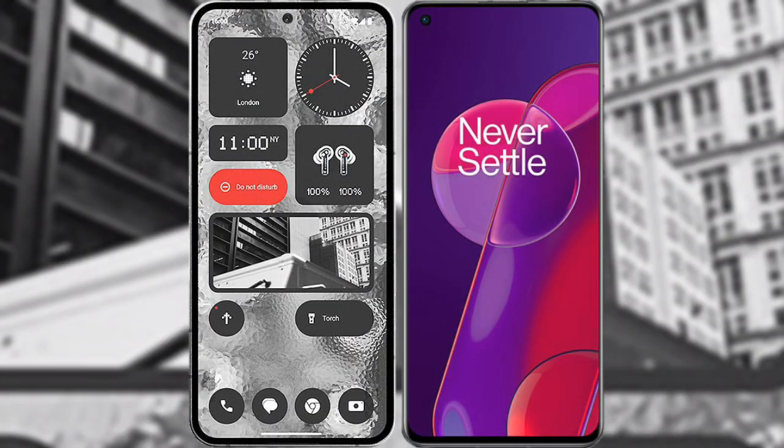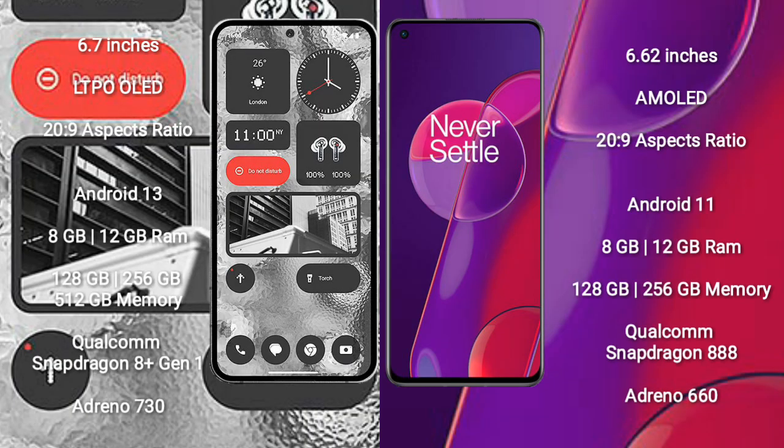I will compare the new Nothing Phone 2 with OnePlus 9RT. Nothing Phone 2 comes with a 6.7 inches LTPO OLED display and aspect ratio 20 to 9. OnePlus 9RT comes with a 6.62 inches AMOLED display and aspect ratio 20 to 9.